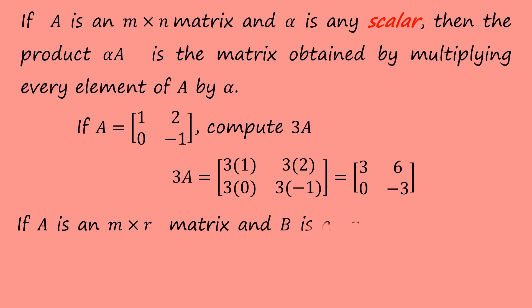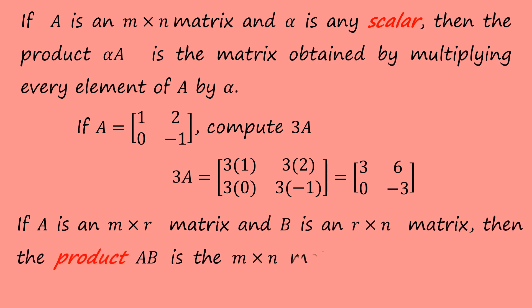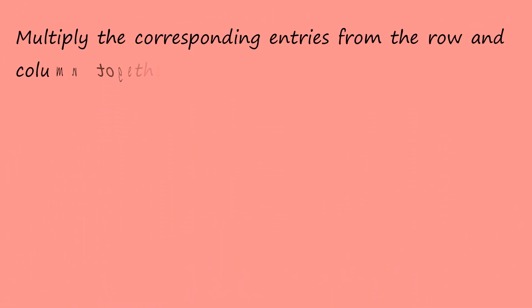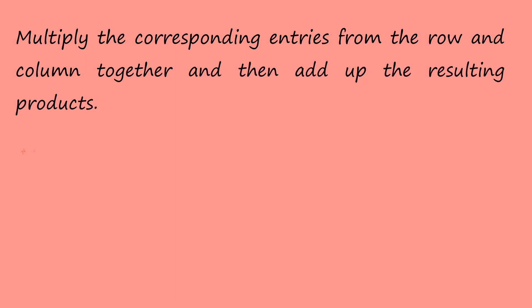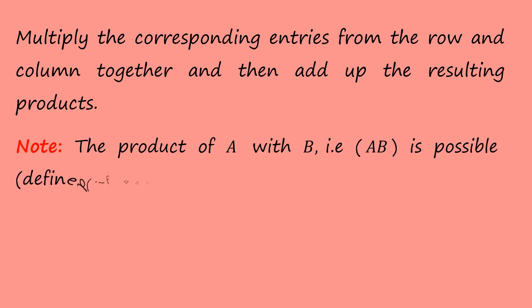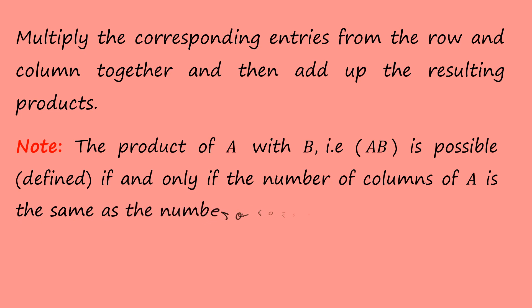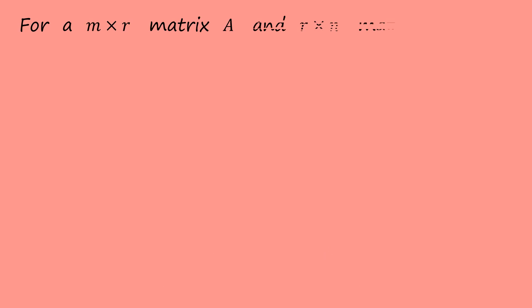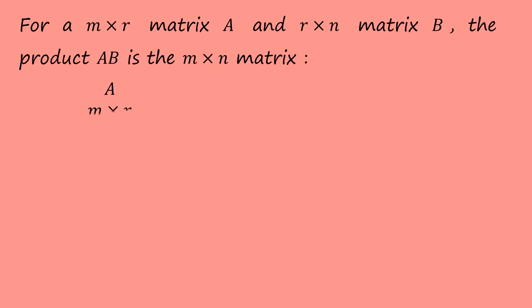If A is an m by r matrix and B is an r by n matrix, then the product AB is the m by n matrix whose entries are determined as follows: multiply the corresponding entries from the row and column together and then add up the resulting products. The product AB is possible if and only if the number of columns of A is the same as the number of rows of B. For an m by r matrix A and r by n matrix B, the product AB is the m by n matrix. The column count of A equals the row count of B, so the inside dimensions collapse.